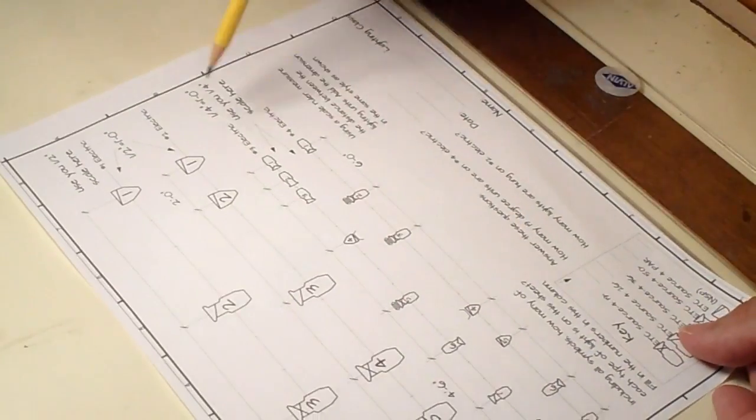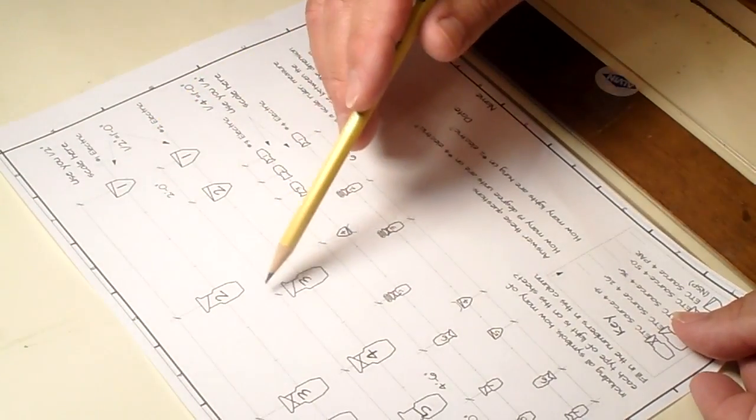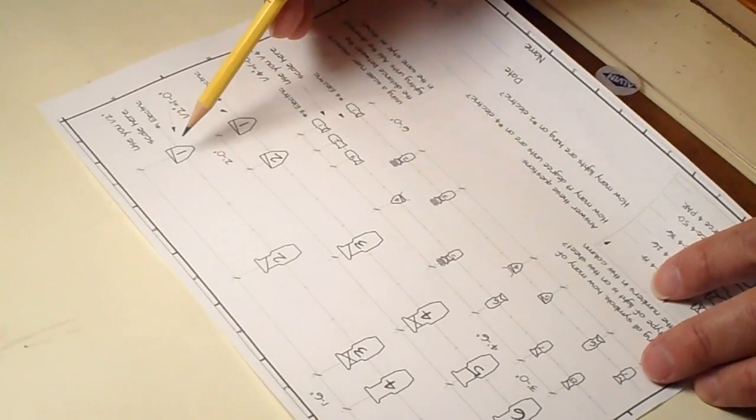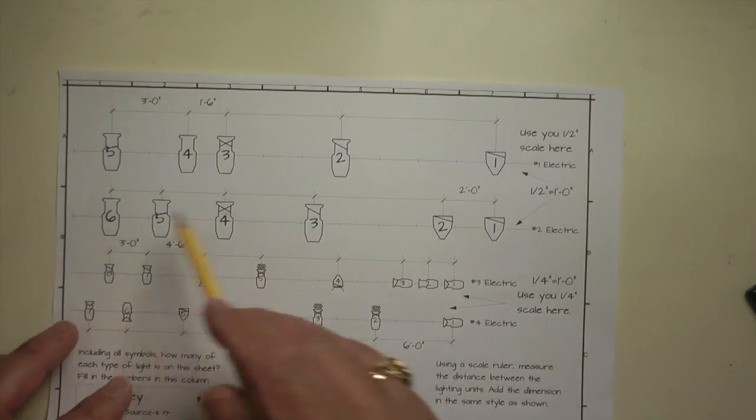The lighting units are numbered from right to left, because when we're dealing with a plot, we deal with from stage left to stage right. So this is one, two, three, four, five, and so on.